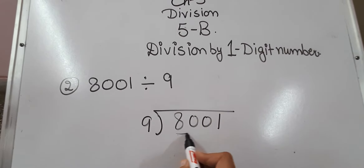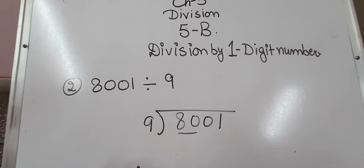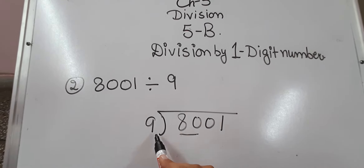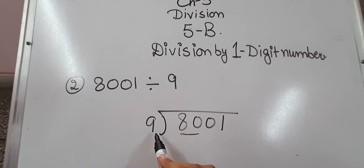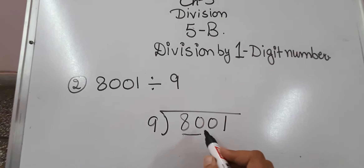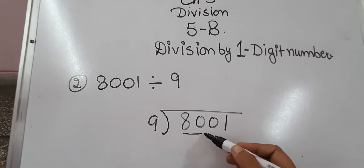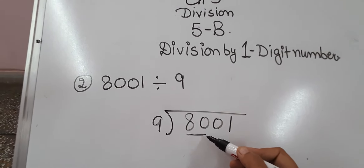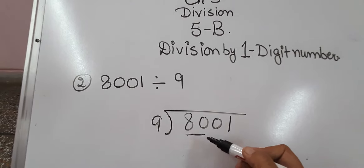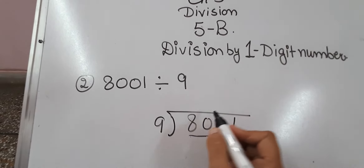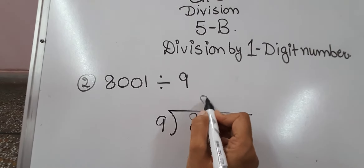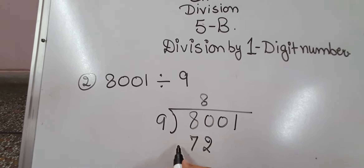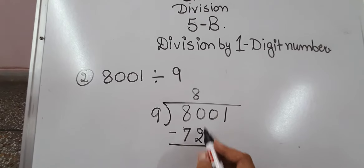Another example: 8001 divided by 9. 8 is smaller than 9, so we are going to take the two digits together, making 80. In the table of 9: 9×8 is 72, 9×9 is 81. 81 is greater than 80, so 9×8 is 72. Now we are going to subtract.